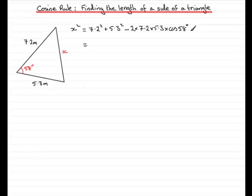You've got to remember to times it by the cosine 58 before you press equals. If you do that sum on your calculator, what you should find is you get 39.4865 and so on. Just type it in as 7.2 squared plus 5.3 squared, take away 2.7.2 times 5.3 times cos 58, then press equals. Now to find out what x is, because this is x squared, we need to square root both sides.